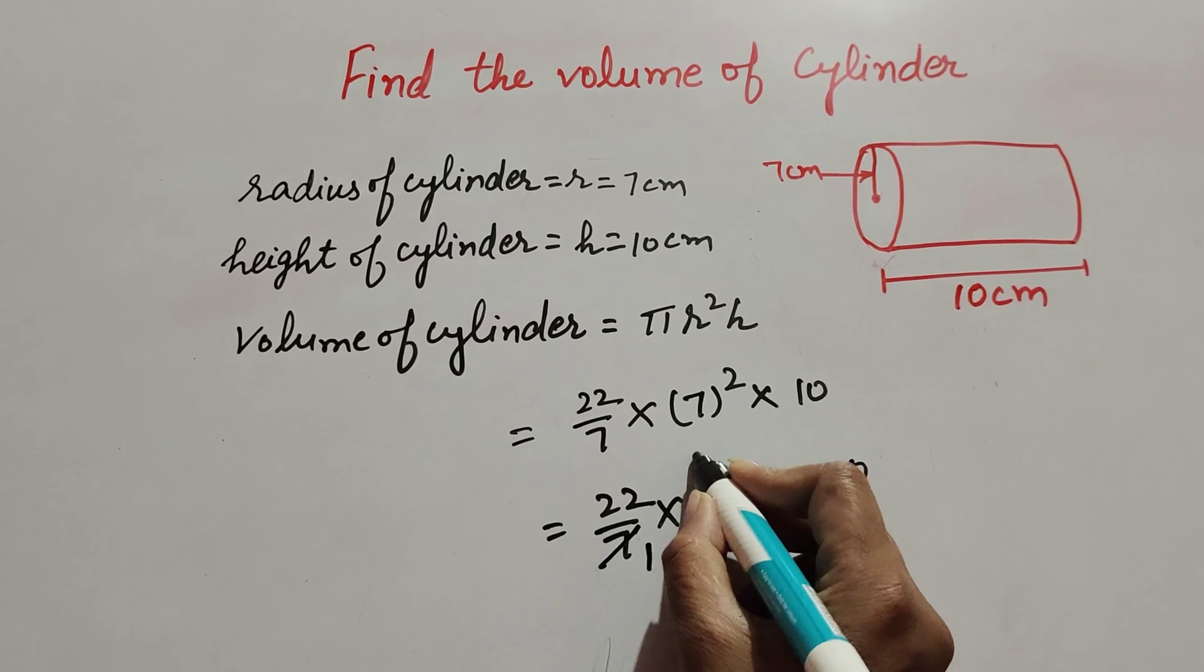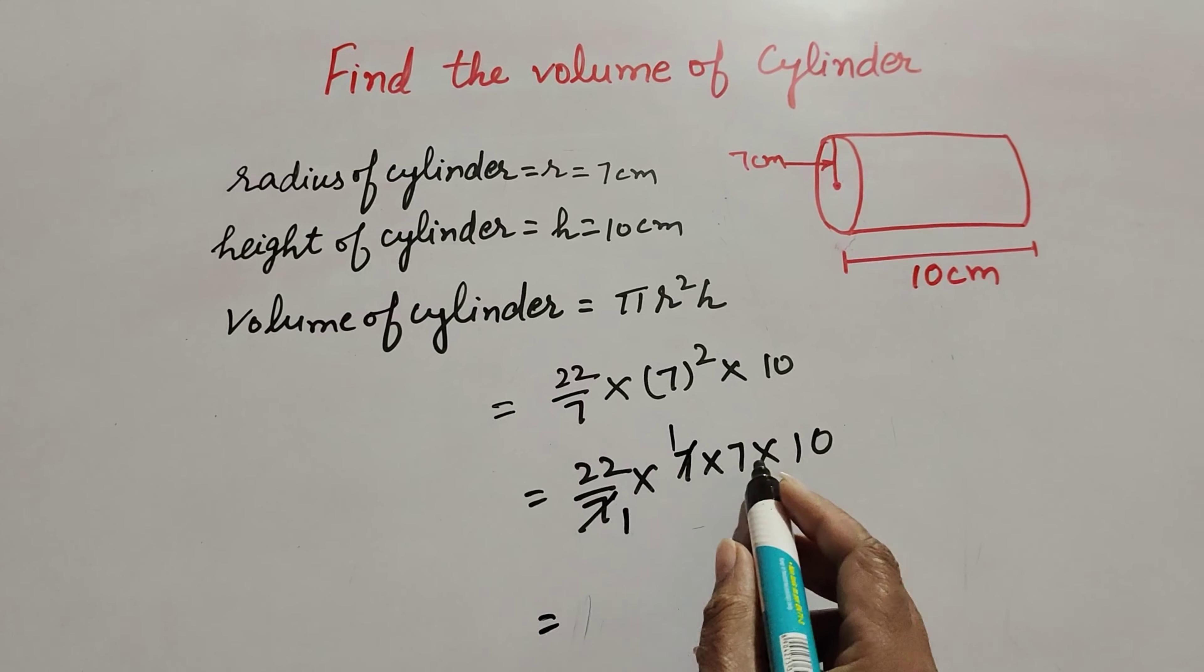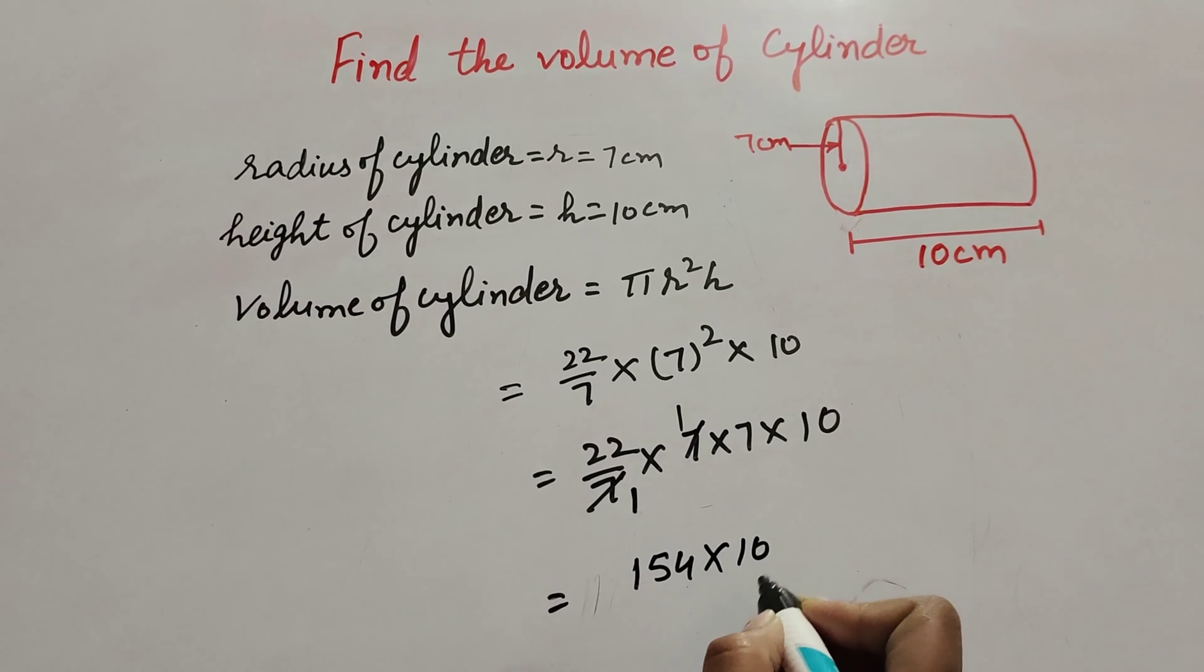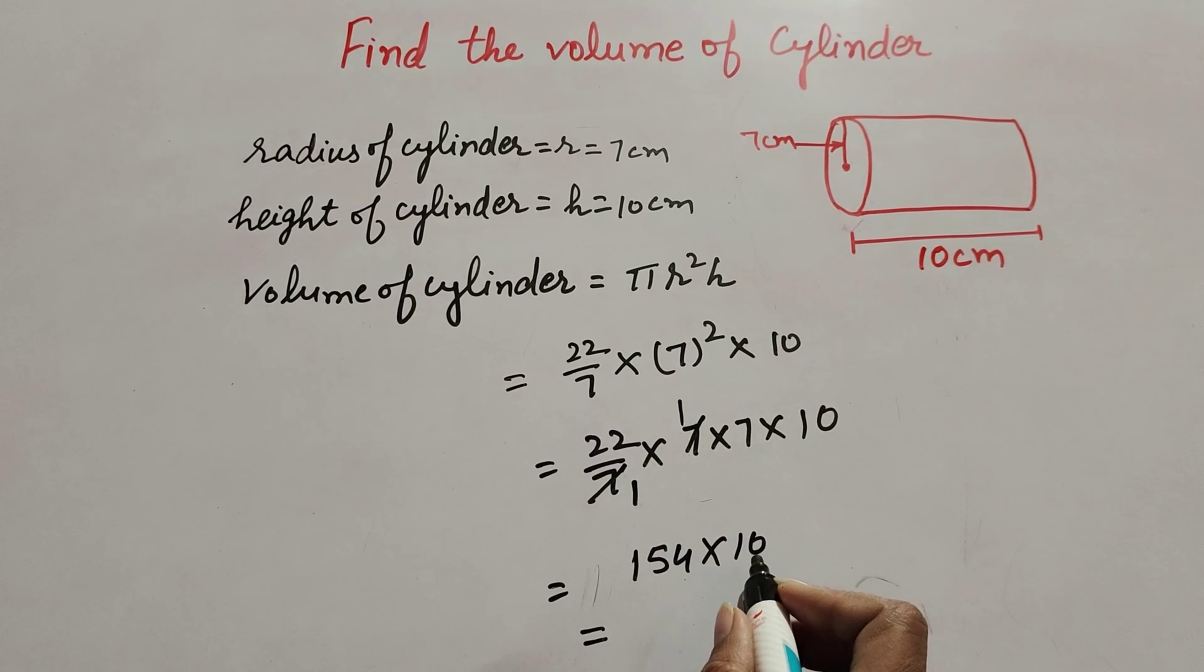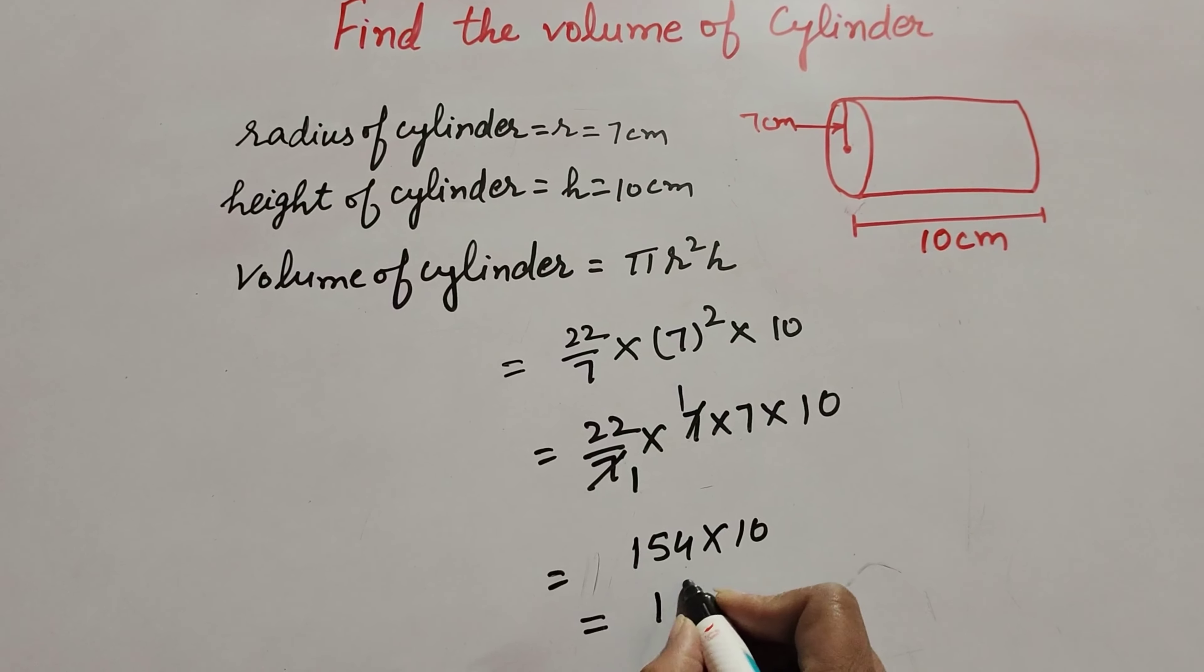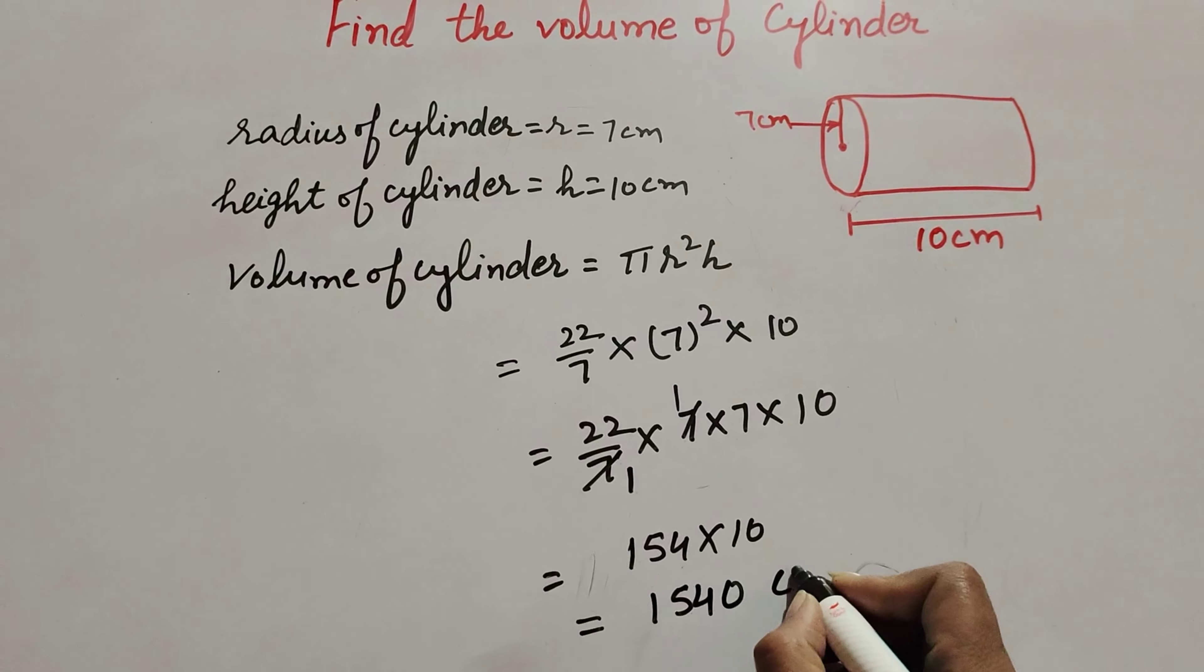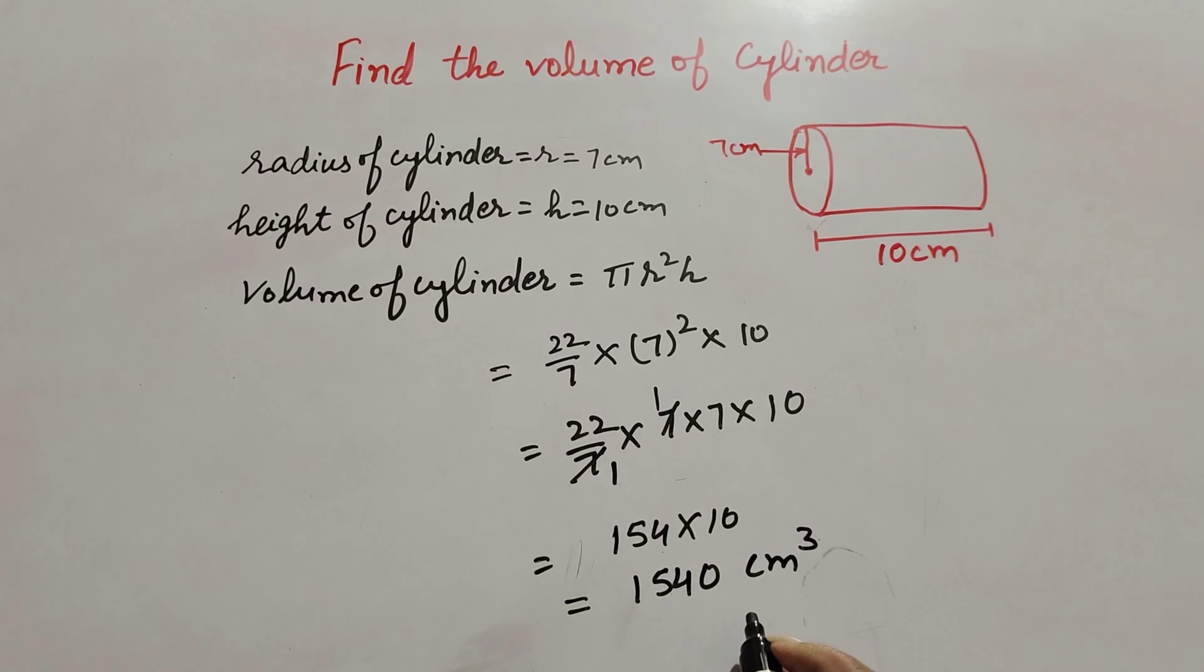154 multiplied by 10, we get the answer 1540 centimeter cube. So, the volume of the cylinder is equal to 1540 cm³.